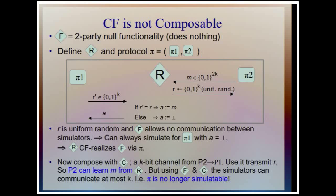However, if we compose with a k-bit channel, it becomes impossible to simulate in the ideal world. In the real world, player two can send R to player one, who then forwards it to the resource, thereby both learning the 2k-bit message M. In the ideal world, F allows no communication, so the only thing they have is the composed k-bit channel — there's no way for them to share a 2k-bit message. The conclusion: composing with this channel means this is no longer a collusion-free realization.